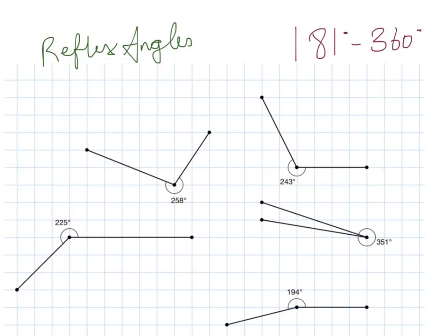The last group are reflex angles, which is any angle that is greater than 180 degrees. So it's any angle that's larger than a straight line and a circle, all the way up to a full circle, 360 degrees. The smallest angle on here is 194 degrees, which is just a bit more than a semi-circle.